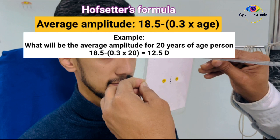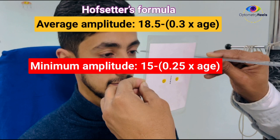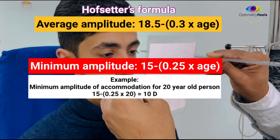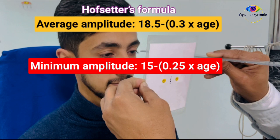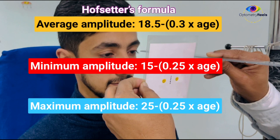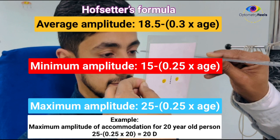Let's understand this with an example. If we need to calculate the average amplitude of accommodation for a 20-year-old person, as per Hofstetter's formula it will be 12.5 diopters. The formula for the minimum amplitude of accommodation for any age is 15 minus 0.25 multiplied by the age, and for a 20-year-old that will be 10 diopters. To find the maximum amplitude, use the formula 20 minus 0.25 multiplied by the age, giving a maximum of 20 diopters for the same 20-year-old.